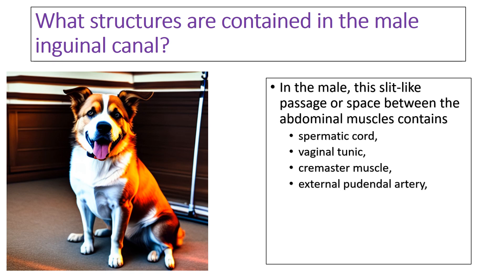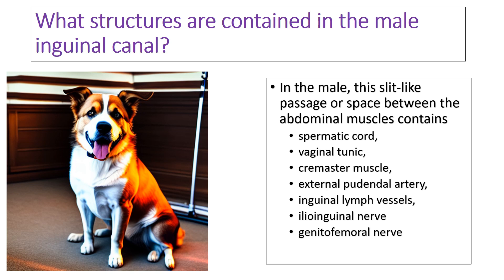Another structure contained within the male inguinal canal is the external pudendal artery, which is a collateral branch of the common femoral artery and serves as the primary blood supply to the penis and clitoris. It passes through the inguinal canal before supplying the penis. Additional structures include inguinal lymphatic vessels and important nerves such as the ilioinguinal nerve and the genitofemoral nerve, which supply the testicular tissue and the tissues of the scrotum.